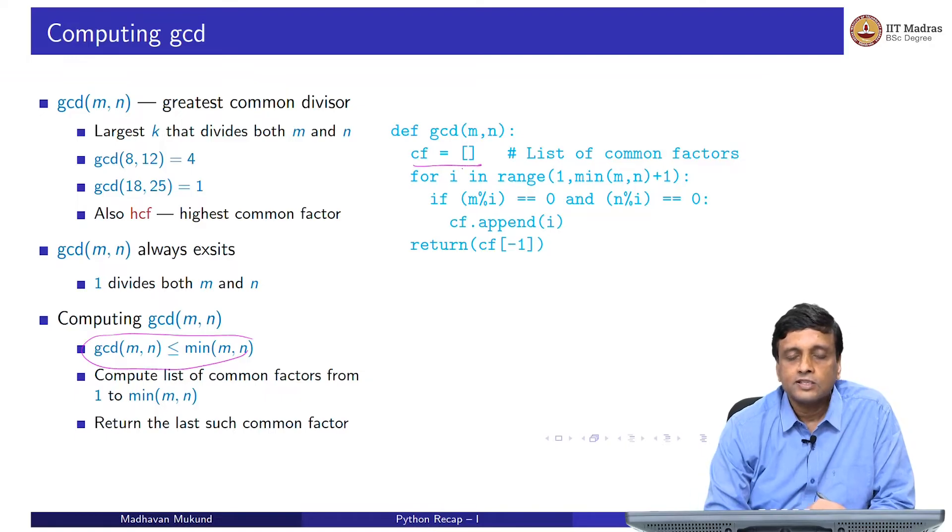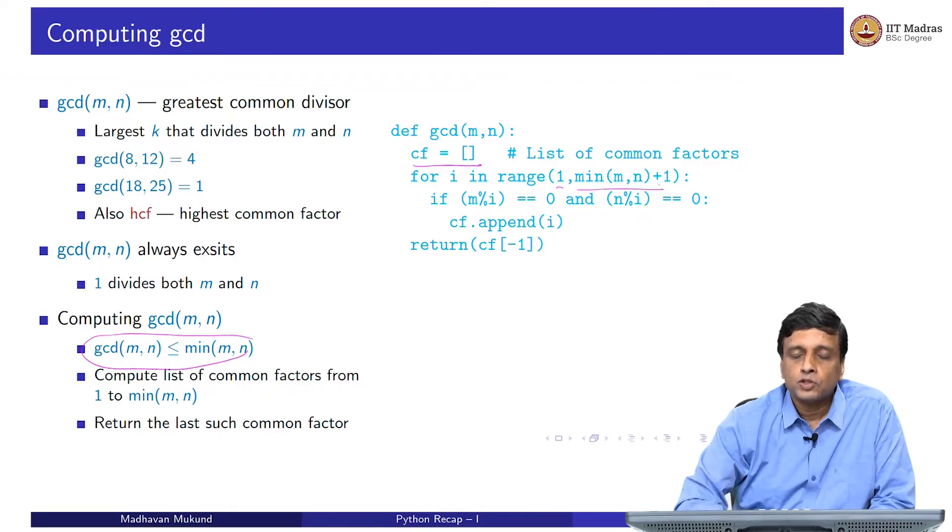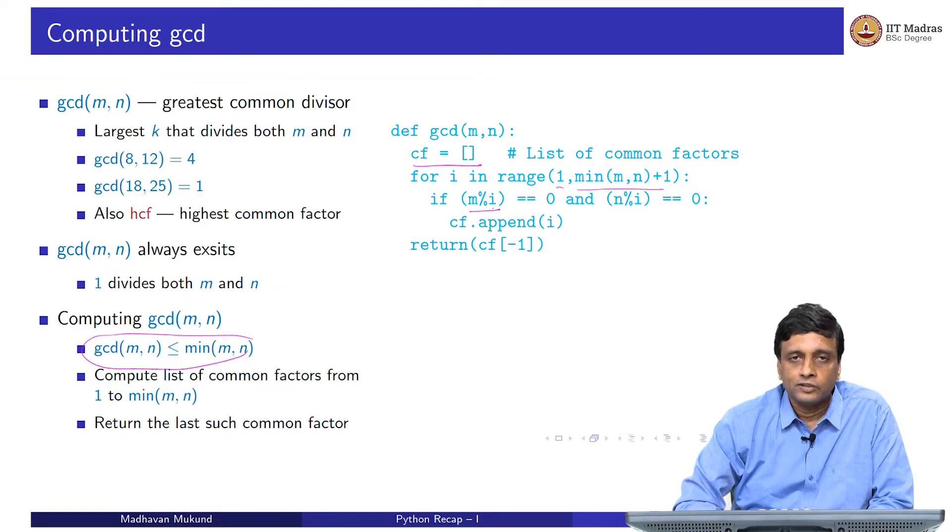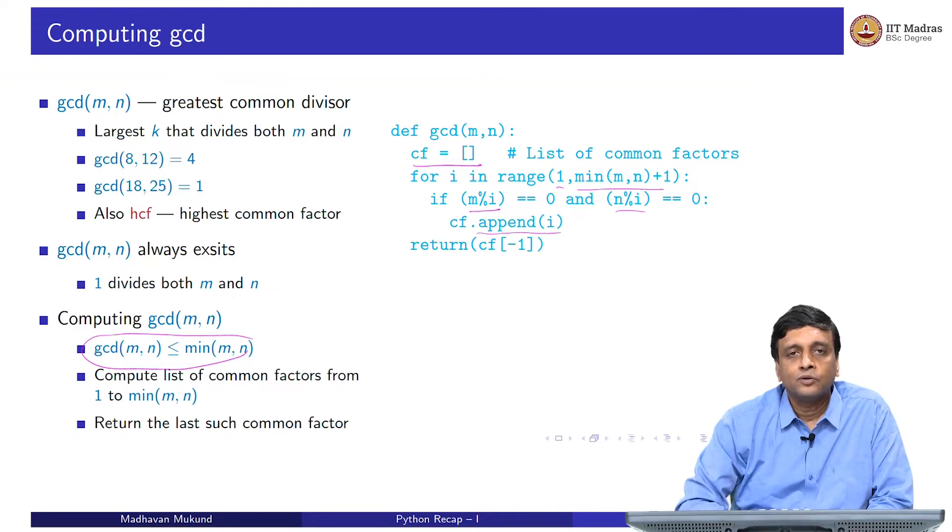You start by setting this list of common factors to be empty. Now you run i from 1 to this minimum plus 1. For each i, you check whether it divides m. When it divides m, the remainder of m divided by i is 0, that is, there is no remainder. So it divides m, it also divides n. If this is the case, then you add it to this list of common factors.